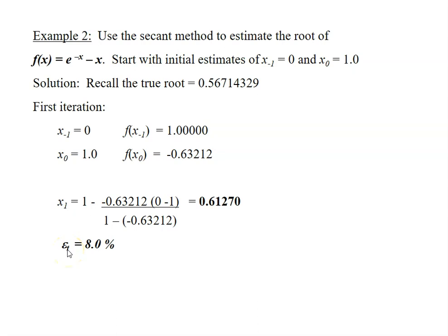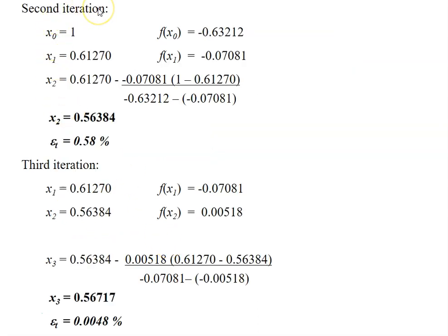Now, this is just a bonus. They are calculating the true error. So they are comparing this value with this true root. So the difference is 8.0%. As for the second iteration,